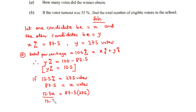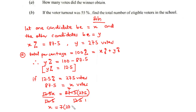Since we want to find X, we divide both sides by 12.5. Now, 87.5 divided by 12.5 equals 7, so we have X = 7 × 275, which equals 1925. So the winner obtained 1925 votes.